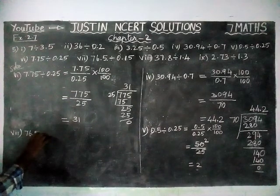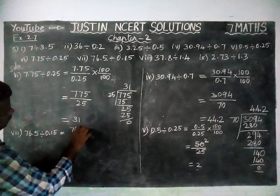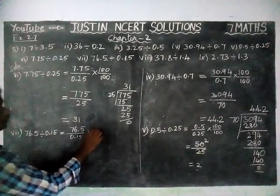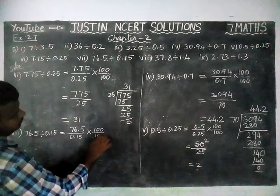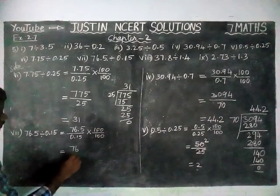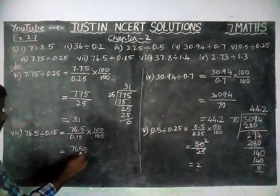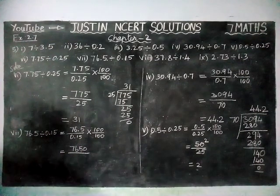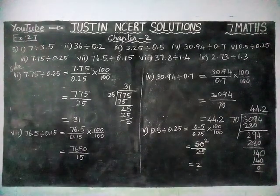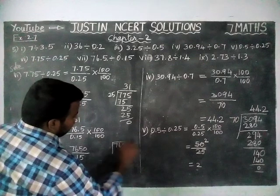7th question: 76.5 divided by 0.15 is equal to 76.5 divided by 0.15. In the denominator we have 2 decimal places, so we are going to multiply and divide by 100. We have to move 2 steps to the right-hand side, giving 7650. Here we have only 1 decimal place, so we add another 0, making it 7650. For 0.15, moving 2 decimal places gives us 15. Now we are going to divide 7650 by 15.